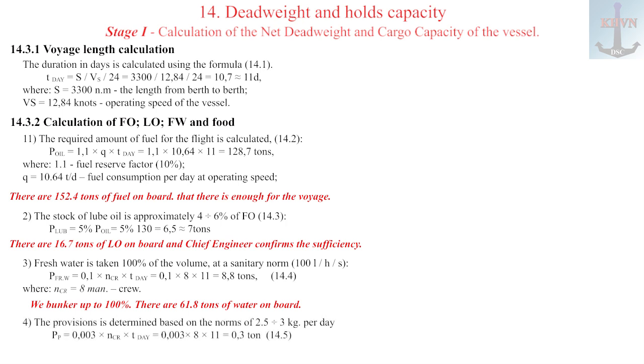4. The minimum required supply of provisions for the crew is determined based on the norms of 2.5 to 3 kilograms per person per day, formula 14.5. We've just replenished our provisions. On board 3.5 tons, enough for the voyage.